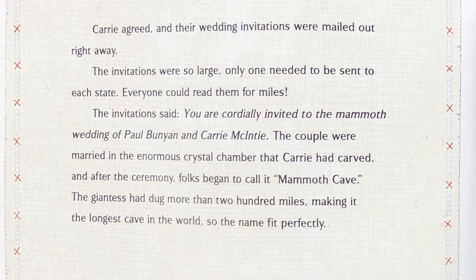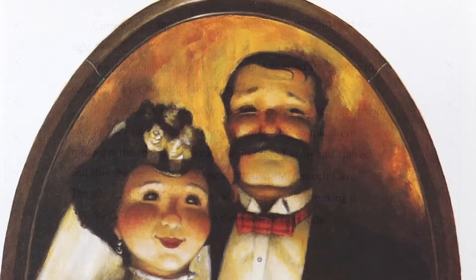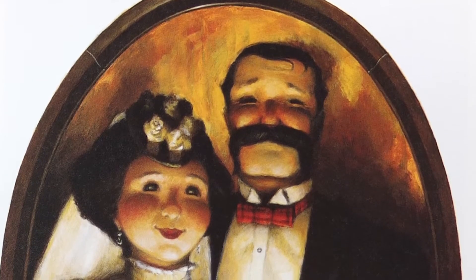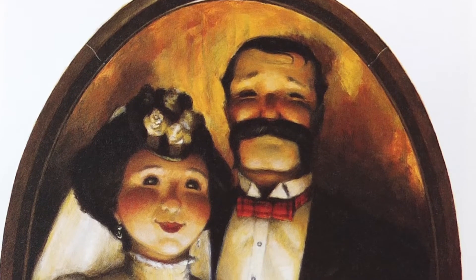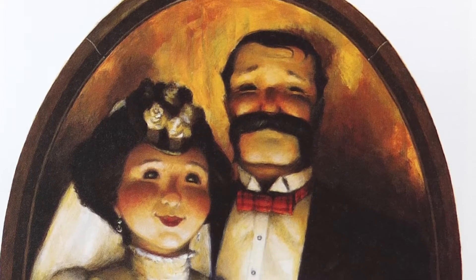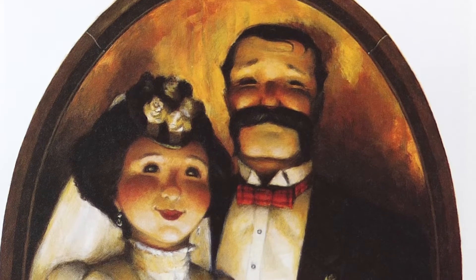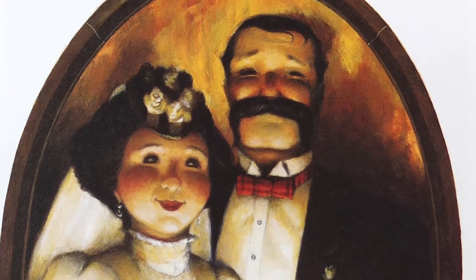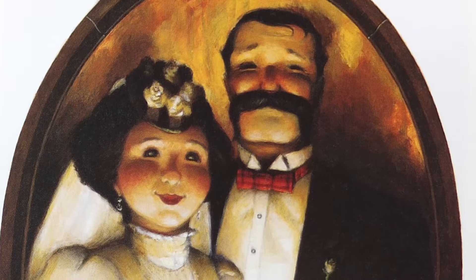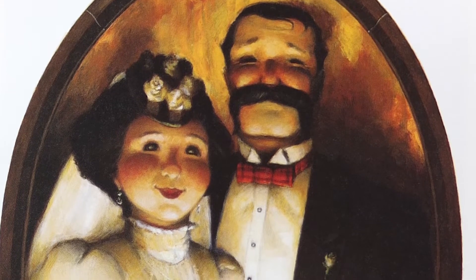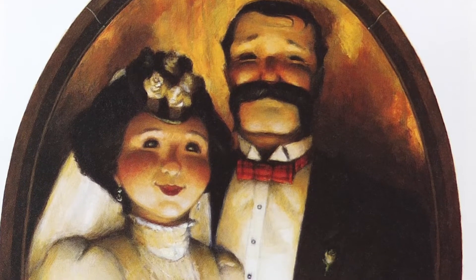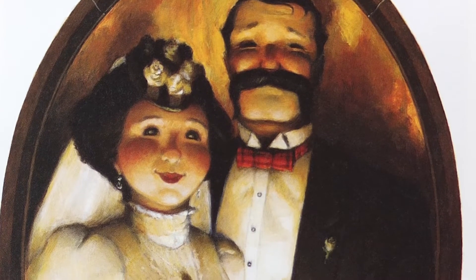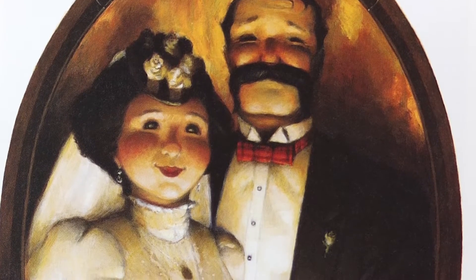The invitations said: "You are cordially invited to the mammoth wedding of Paul Bunyan and Carrie McGinty." The couple were married in the enormous crystal chamber that Carrie had carved, and after the ceremony, folks began to call it Mammoth Cave. The giantess had dug more than two hundred miles, making it the longest cave in the world, so the name fit perfectly.